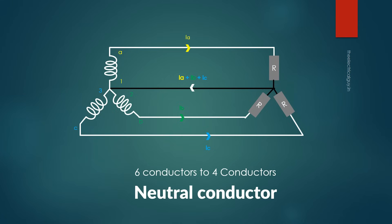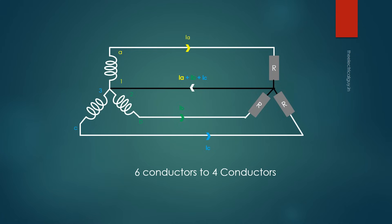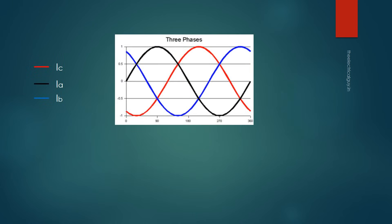The neutral conductor carries the sum of three currents: Ia + Ib + Ic. Many people think the neutral conductor must be three times the size of the other conductors, since it carries the sum of all three return currents. But the currents of the three phases are out of phase by 120 degrees from each other. If we draw a waveform for these currents, you will find that the sum of return currents is zero at every instance.